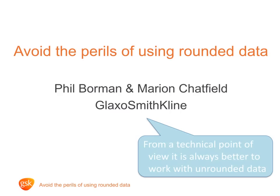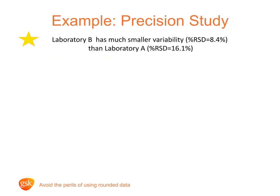Firstly, we're going to look at an example involving a chemical analytical measurement method which measures impurities. The situation is a precision study which looks at the variability of the method in two laboratories. I have the analyst from Lab B with me.